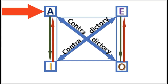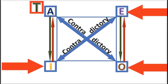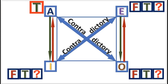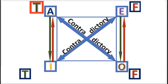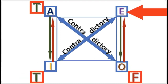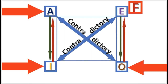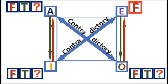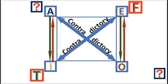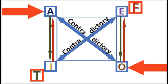Next practice problem: If A is true, what are the other truth values? O is false, I is true, and E is false. Final practice problem: If E is false, what are the other truth values? I is true, and A and O are undetermined.